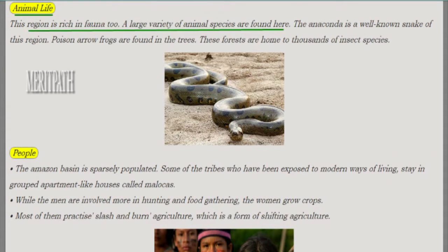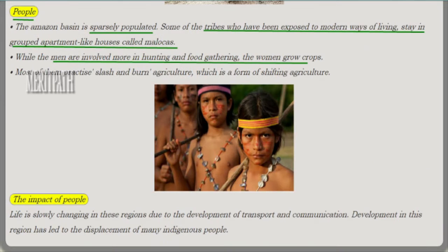This region is rich in animal variety. A large variety of animals are found here. Anaconda, a well-known snake, is found in this region. Poisonous arrow frogs are found on the trees, and many insects also live in this forest. In this image we see an anaconda snake.